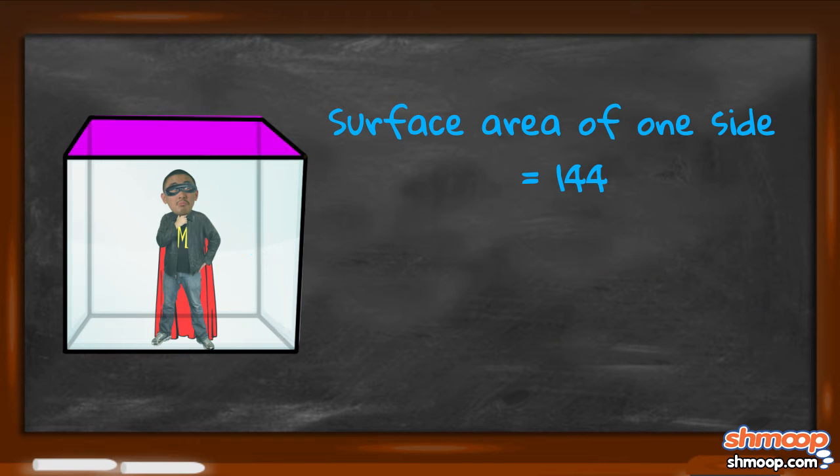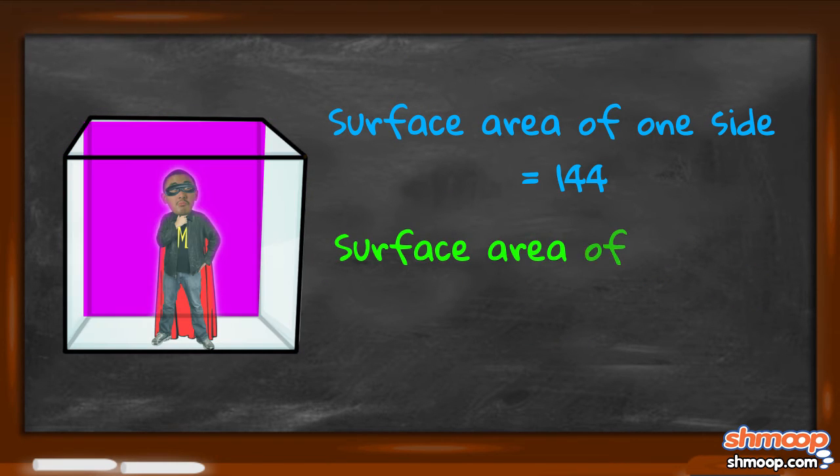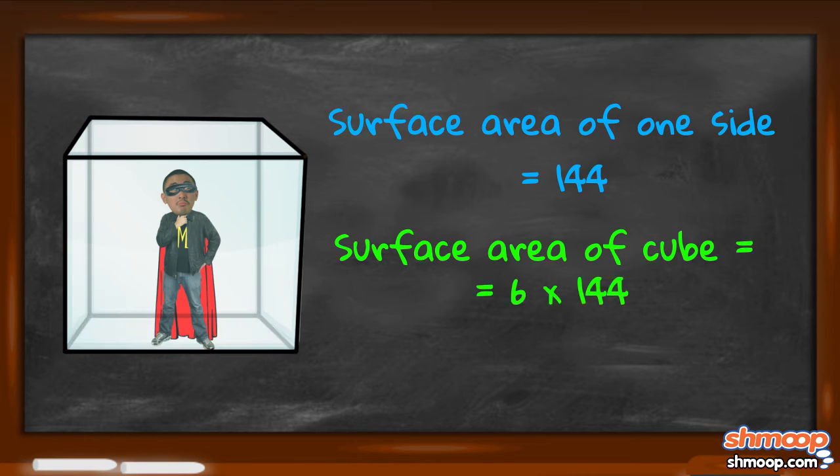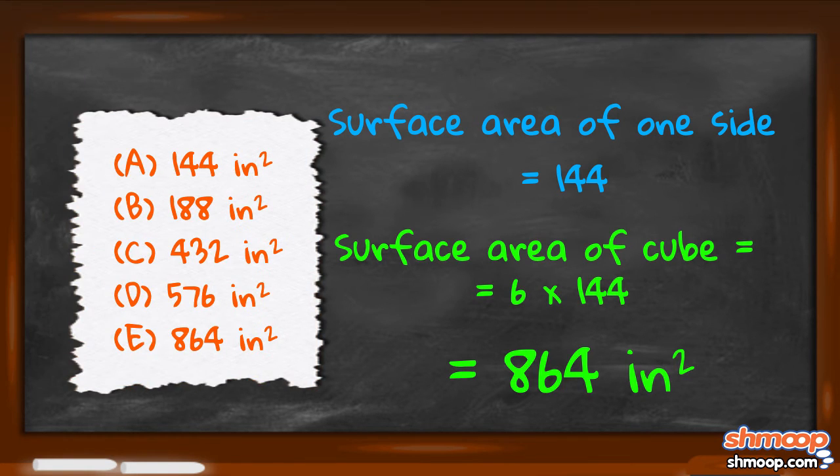We can multiply that number by the number of faces, which is 6, giving us 864. The surface area of the entire cube is 864, so E is the answer.